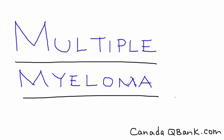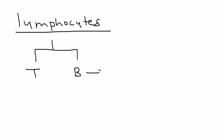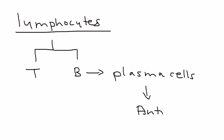Multiple myeloma is the topic for this video. I want to give a brief review of the types of blood cells we're going to be talking about. Lymphocytes branch out into T and B cells, and B cells differentiate into plasma cells. Plasma cells produce antibodies, also known as immunoglobulins (Ig). And immunoglobulins are at the heart of multiple myeloma.